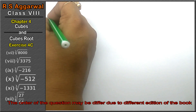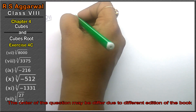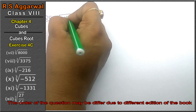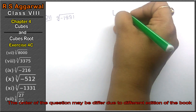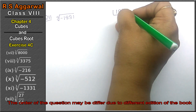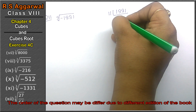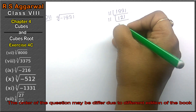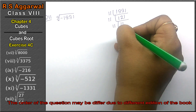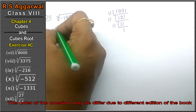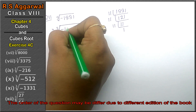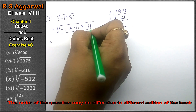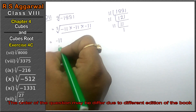Let's do question number 11 of Exercise 4C. Question number 11 is cube root of minus 1331. We know 1331 = 11³, since 11×11=121 and 11×121=1331. Writing in the cube root: (−11)×(−11)×(−11). Making the pair of 3 and taking one out, the answer is −11.